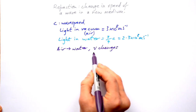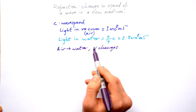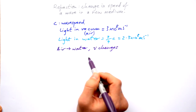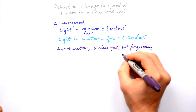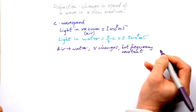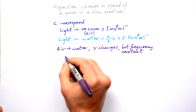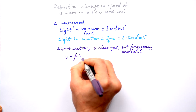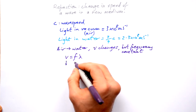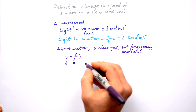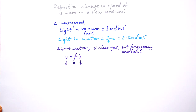I'm going to call speed V here, reserving C for the speed of light in a vacuum. But the frequency stays the same. Our wave equation is V equals F lambda. If the speed goes down as light goes into water but the frequency stays the same, then the wavelength has to go down as well, because velocity is proportional to wavelength — whatever one does, the other does as well.